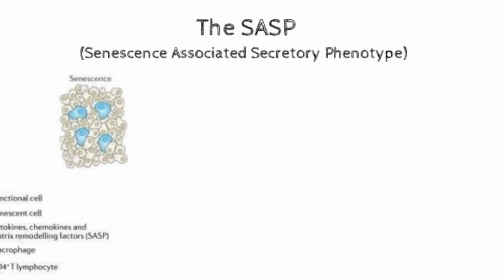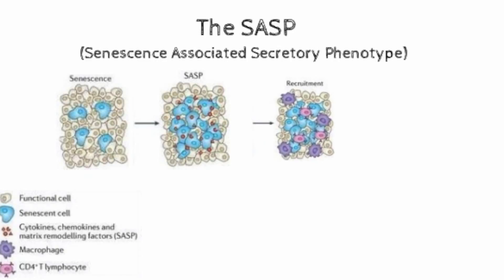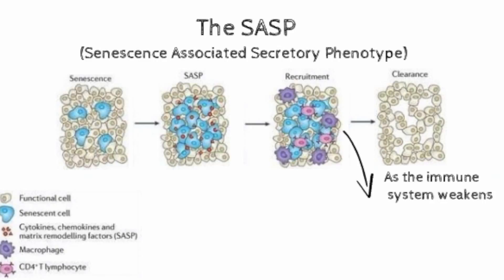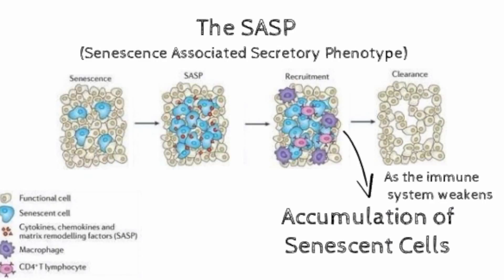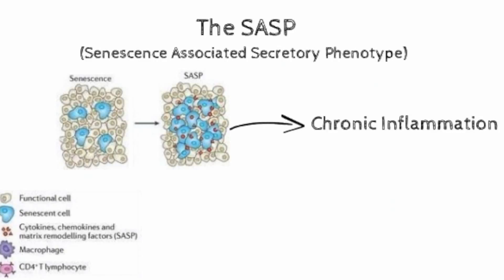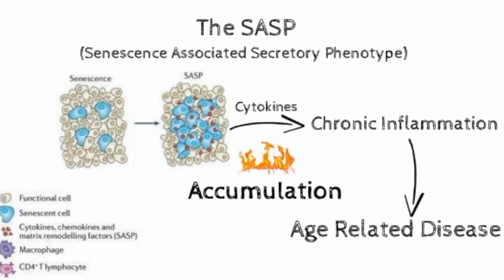Senescence causes aging through a group of proteins called the SASP. The SASP usually recruits the immune system to clear senescent cells, but as the immune system ages, senescent cells aren't cleared as well and they accumulate. The SASP also causes inflammation through the release of proteins called cytokines. This effect of the SASP multiplies as more cells accumulate and the resulting chronic inflammation begins to take its toll. Chronic inflammation significantly raises the risk of age-related disease, the most prominent one of all — cancer.